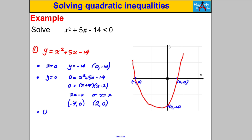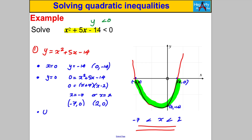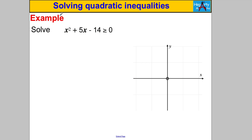Drawing the u-shaped graph through those points — we're trying to find where y < 0 on this graph. The y-values are less than 0 below the x-axis, which corresponds to x-values between -7 and 2. Because we have a strict inequality sign we use a strict inequality, giving -7 < x < 2. That is our solution.